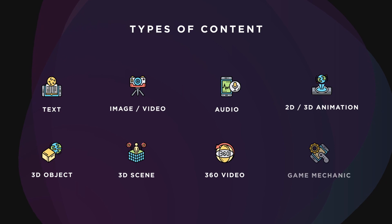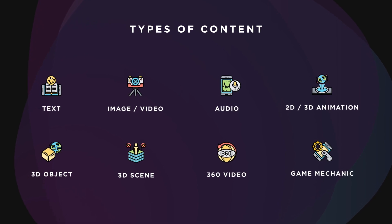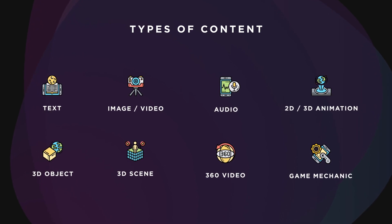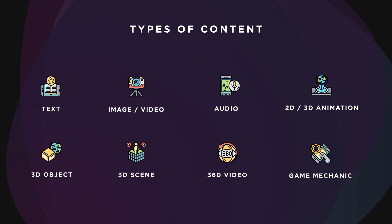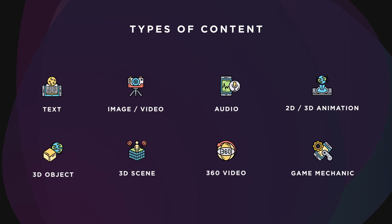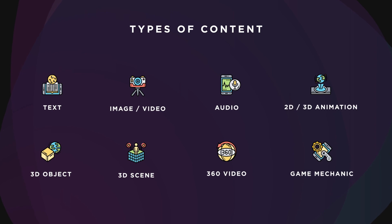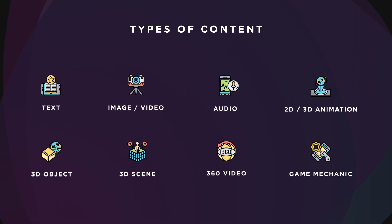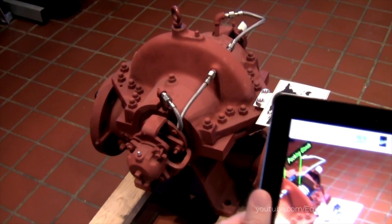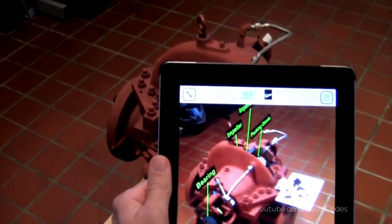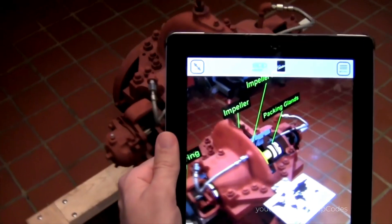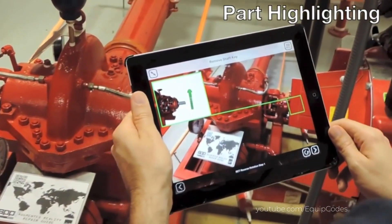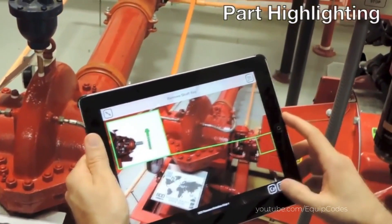What type of content can we place in marker-based AR? It could be text, image, video, audio, 2D animation, 3D object, 3D animation or a complex 3D scene, 360 video, a game mechanic, or even all of those together. It's a great tool for educational purposes or virtual guidelines — for example, placing a virtual engine in AR in order to train engineers on how to maintain it.